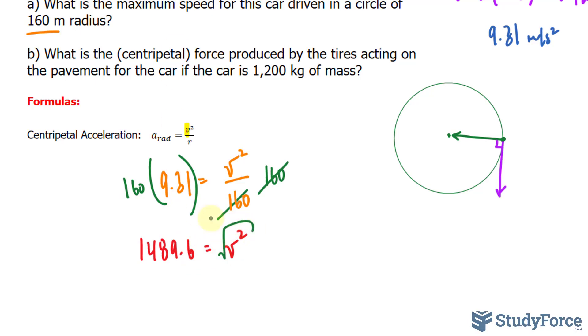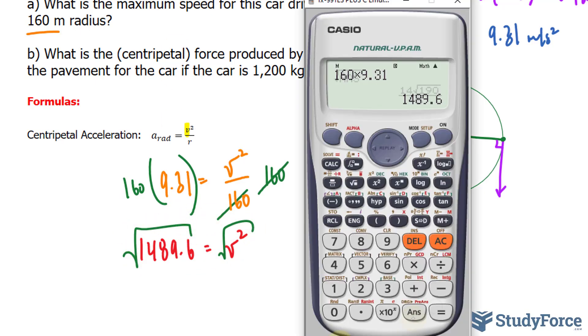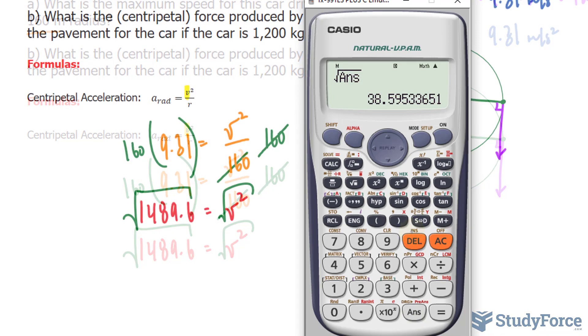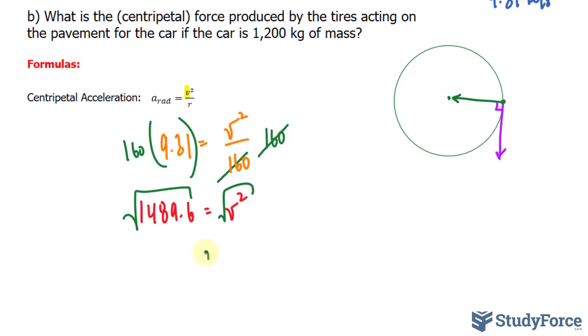Now we square root both sides to find out the velocity. The velocity is 38.59. Let's round this to 38.6 meters per second. We're not taking into account significant figures here.